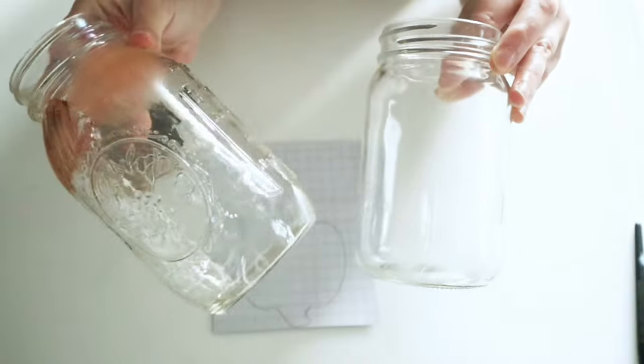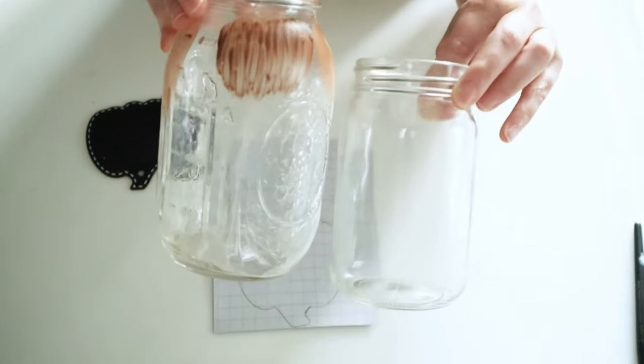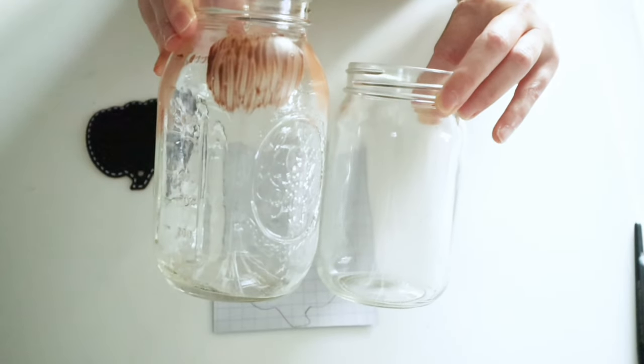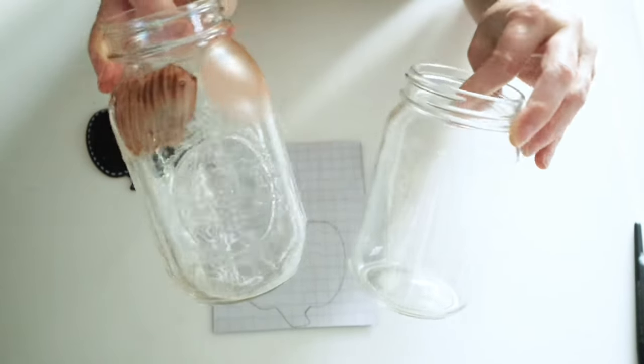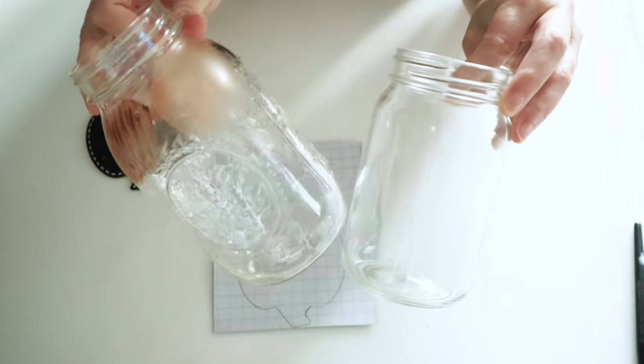For this project, I'm going to be using some glass jars. I picked up this smaller one from Dollar Tree. And then you can see clearly this mason jar, the bigger one, is one that I've had for a while. I've tested out paint colors on it. So I figured it'd be perfect for this project.